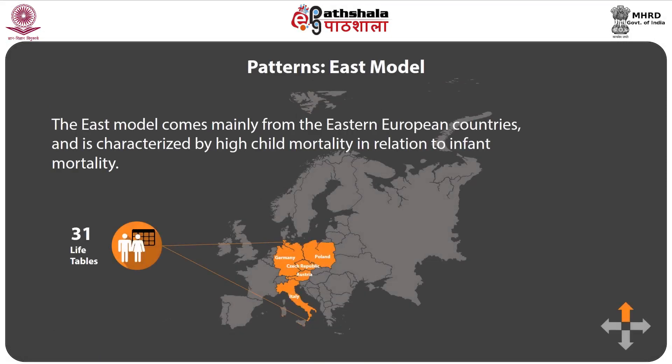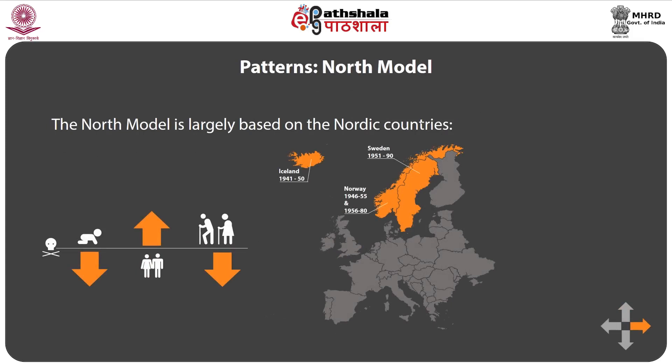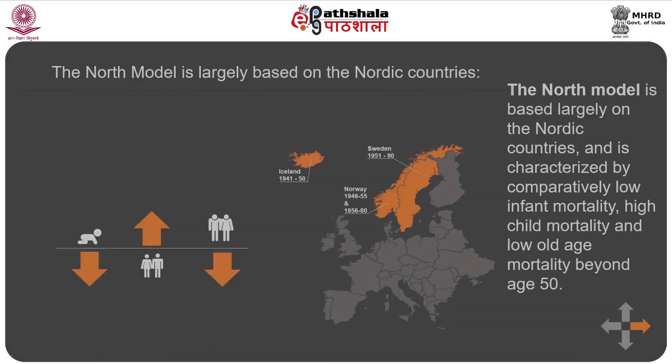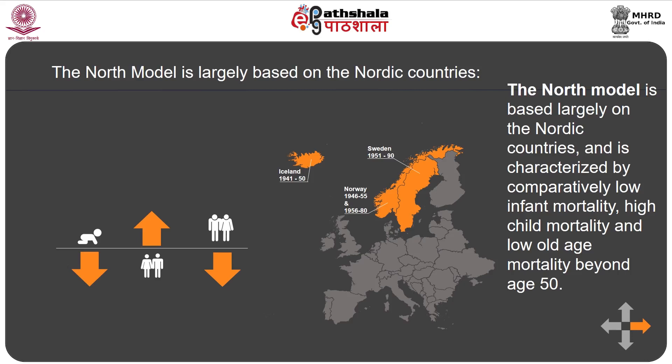Each pattern had a characteristic pattern of child mortality. The East model comes mainly from Eastern European countries and is characterized by high child mortality in relation to infant mortality. It constitutes a total of 31 life tables from Austria, Germany, the Federal Republic of Germany after the Second World War, Northern and Central Italy, and some from Czechoslovakia and Poland. The North model is based largely on Nordic countries and is characterized by comparatively low infant mortality, high child mortality, and low old-age mortality beyond age 50. Countries include Iceland 1941, Norway 1941, Norway 1956, and Sweden 1951.